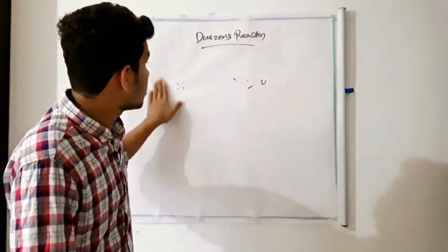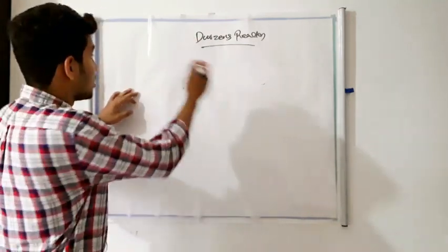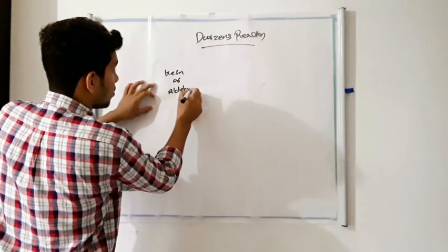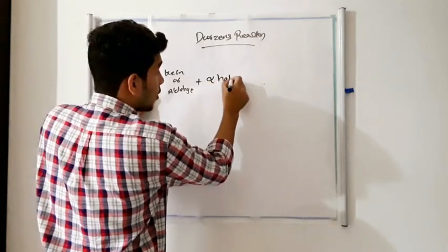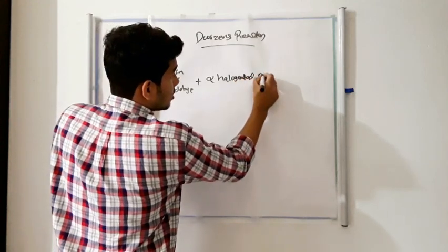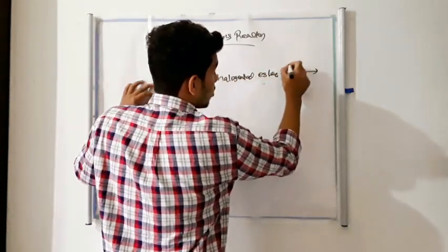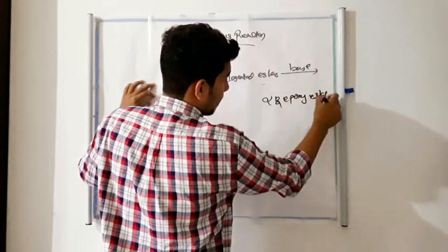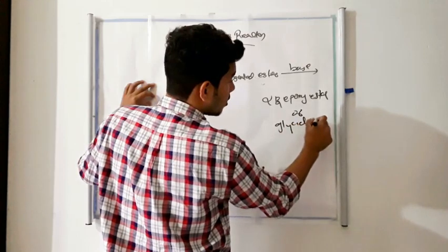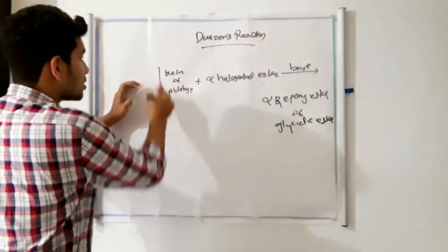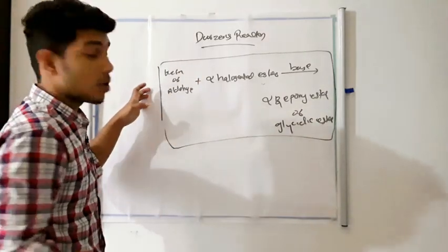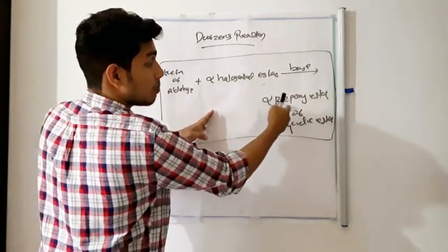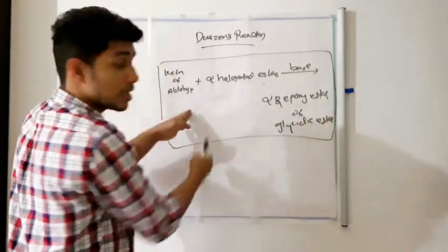Darzen reaction is another method for the preparation of an epoxide. The general formula: a carbonyl compound — ketone or aldehyde — reacts with an alpha-halogenated ester in the presence of a base to form an alpha-beta epoxide ester, also known as a glycidic ester.